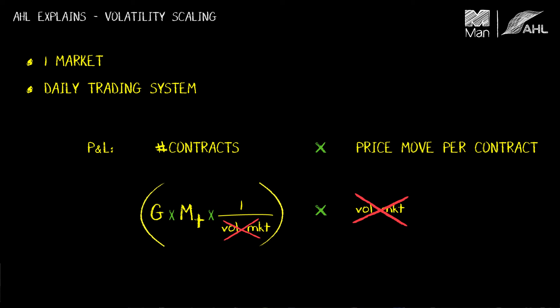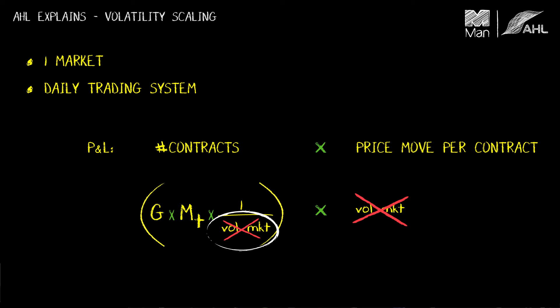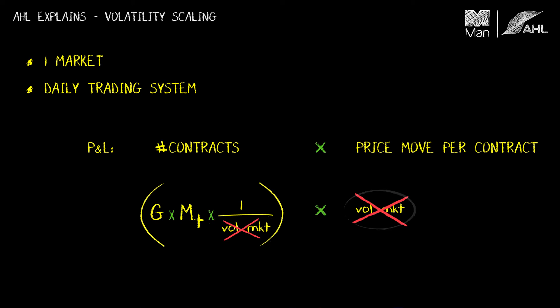Anyone watching carefully will notice a sleight of hand here: the two 'volatility of market' terms are not the same. One must be known at the start of the day in order to work out how many contracts to hold. The other is the volatility actually realised by whatever happens to prices in the market over that forthcoming 24-hour period — so the first is a forecast of the second. Providing that forecast does a decent job, you can cancel these things out. But understanding how large the discrepancies can be between forecast vol and realised vol is very important for understanding the overall risk properties of your strategy.